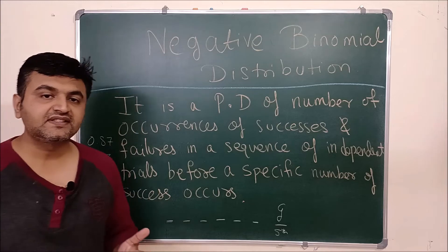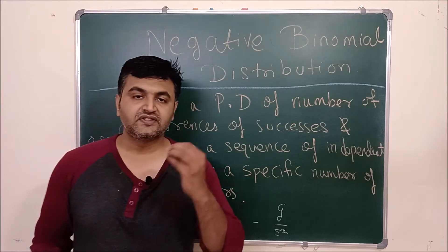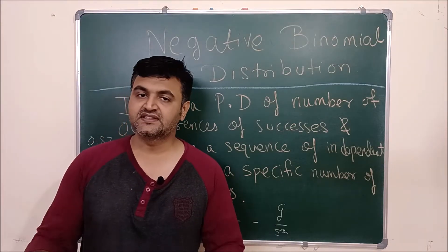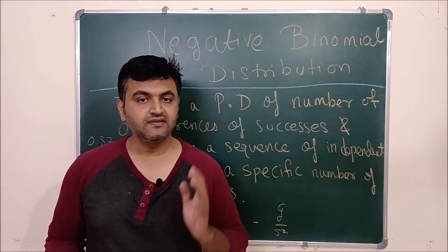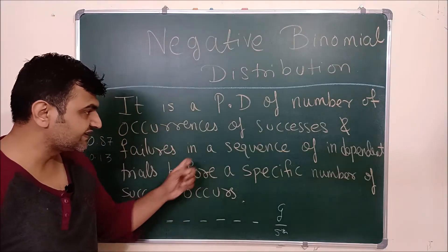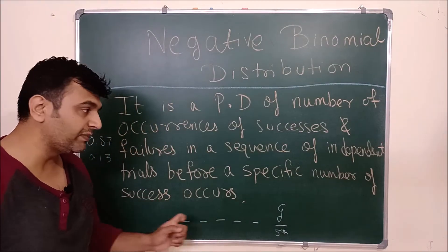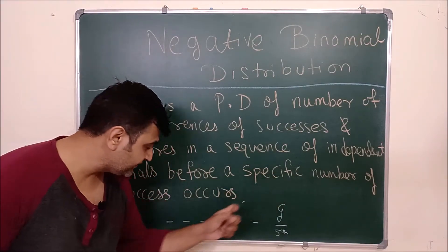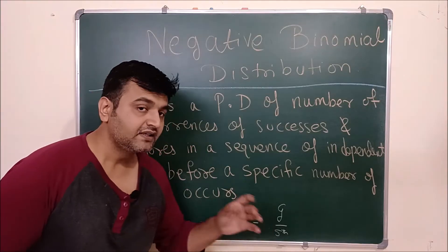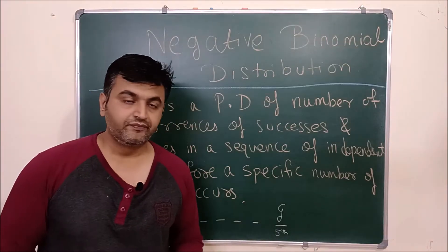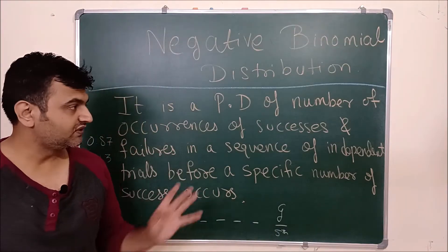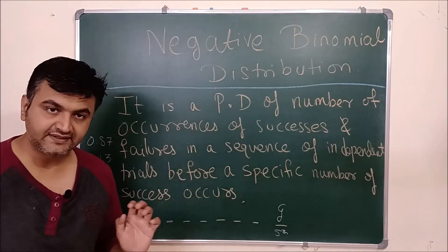In this case, what is a success? If he scores a goal, it's a success. If he misses the goal post, it's a failure. So it's a sequence of successes and failures of independent trials before a specific number of successes — in this case, the 5th goal occurs.